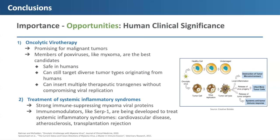Myxoma virus can also be used to treat systemic inflammatory syndromes. The virus has strong immune-suppressing proteins, and immunomodulators like SERP-1 are being developed currently to treat a variety of inflammatory syndromes, including cardiovascular disease, atherosclerosis, and transplantation rejection.